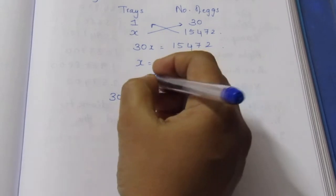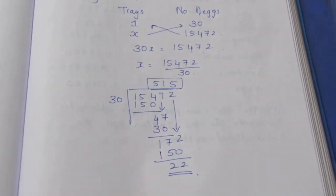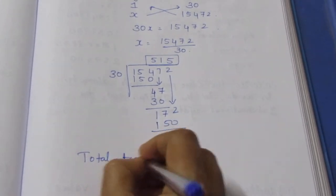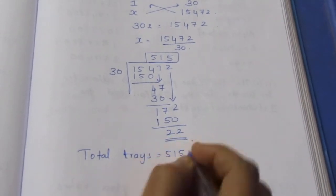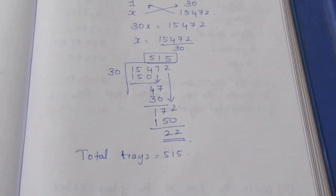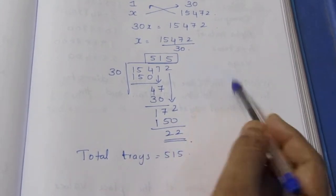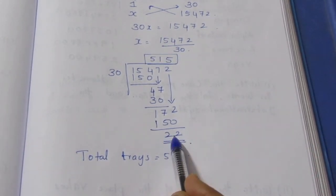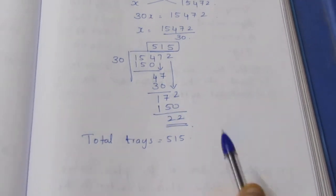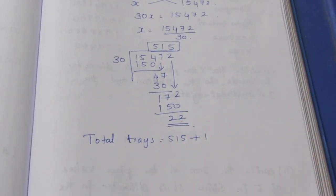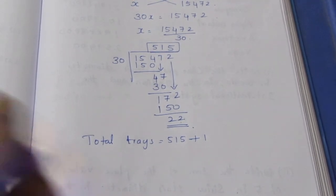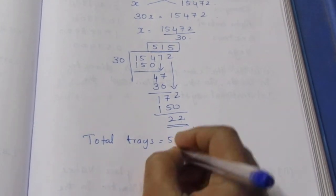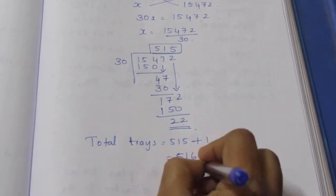We have a total of 515 trays. If we have 22 eggs as remainder stored in a tray, the total number of trays is 516 trays.